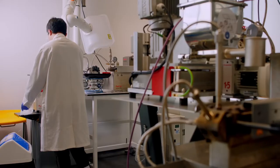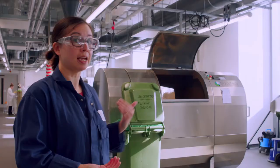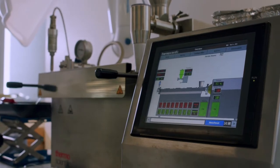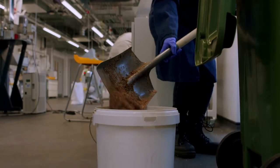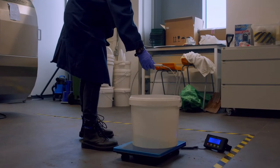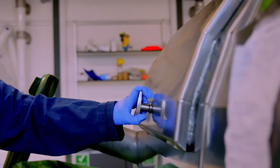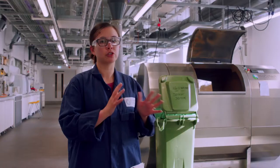So this is our end of life lab and we call it that because the kit in here is basically used to process polymers at the end of their product life. So we have a few bits of equipment in here. We've got our industrial composter that enables us to test compostable plastics. We can also try and work out how long a new compostable plastic would take to compost under these conditions.